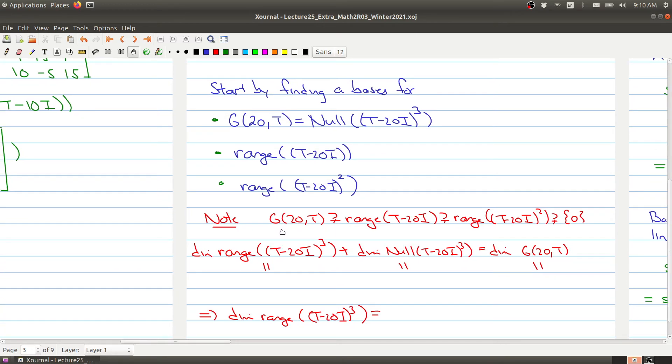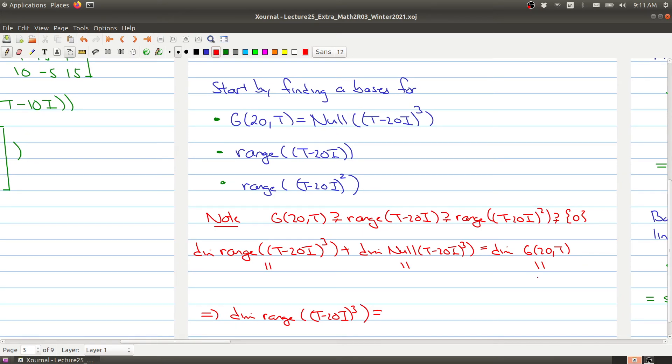Well, just a couple things I want to point out is that the range of the operator, t minus 20i, sits inside the generalized eigenspace. The range of that operator contains the range of the operator, t minus 20i squared, and then inside of that is the zero operator. And why am I only going to two? Why don't I have to worry about three? It's because when I take the range of t minus 20i cubed, this will be a zero-dimensional space, because we know that the generalized eigenspace has dimension three. We know that this is the same thing, that the null space of this guy is equal to the null space of this operator is equal to the generalized eigenspace. And this just follows from the fundamental theorem of linear maps. So the dimension of the range is zero.